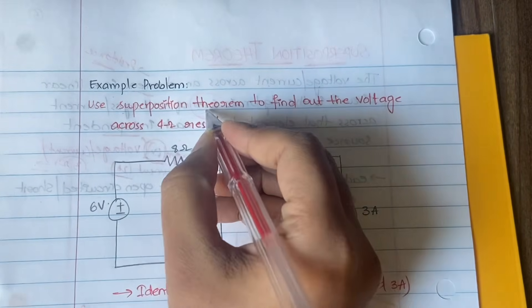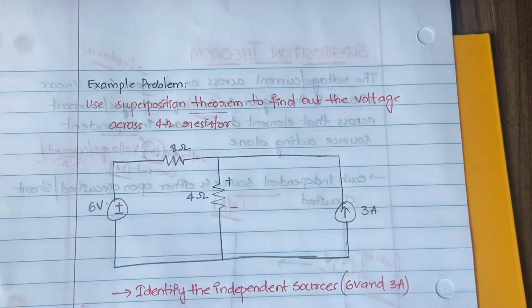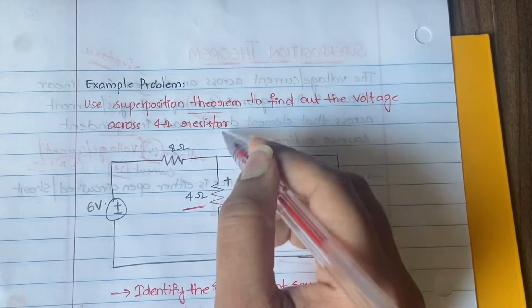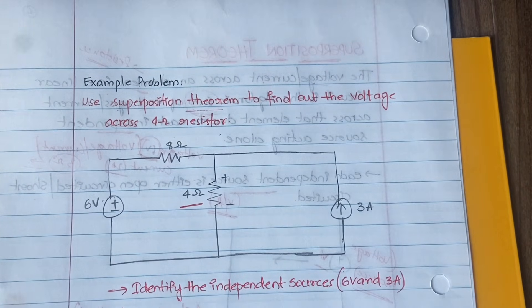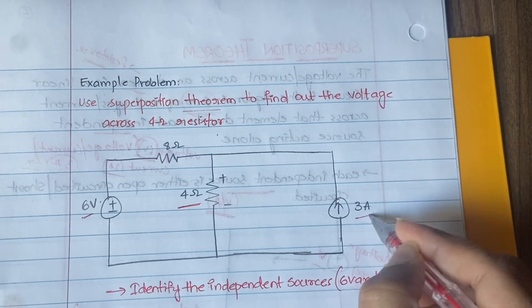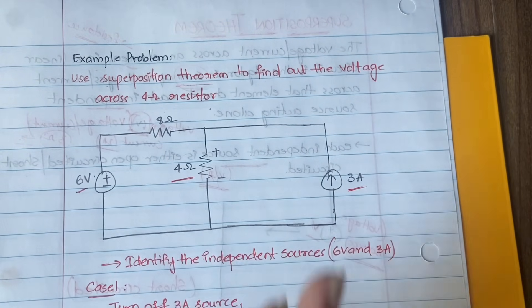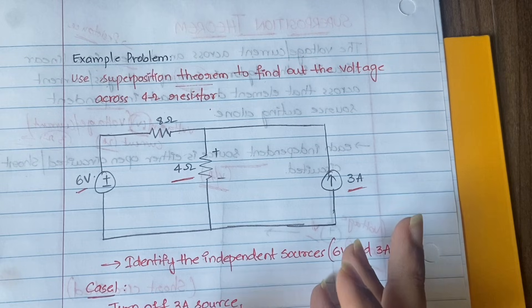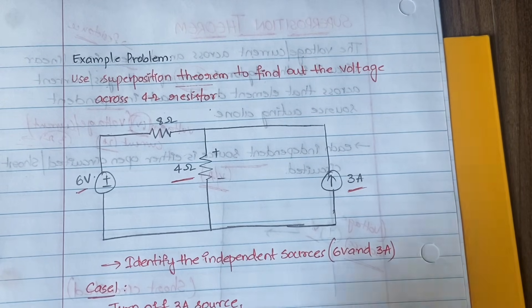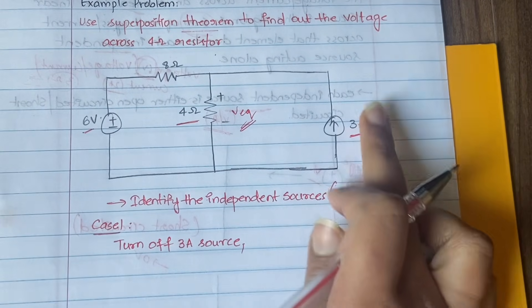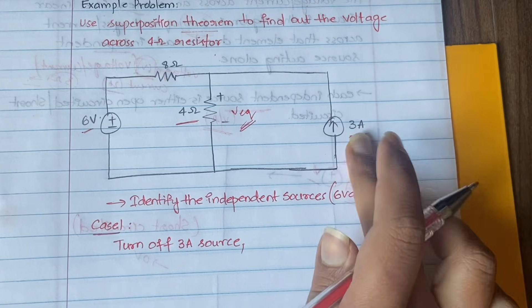Now let us try to understand this with an example problem: use the superposition theorem to find the voltage across the four ohm resistor. First, identify the independent sources in the circuit. Six volts is one independent source and three amperes is another independent source. We have to turn off each independent source, find the voltage in each case, and then add the voltages to get the total voltage.